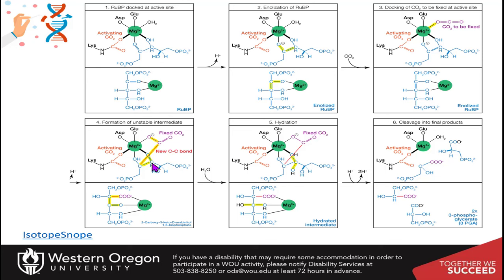This also leads to the reformation of the carbonyl group. Once the carbon dioxide gets fixed to this molecule, it becomes very unstable. A molecule of water comes in and attacks that carbon position — you're adding the OH to one side and the hydrogen to the oxygen that used to be the carbonyl oxygen.